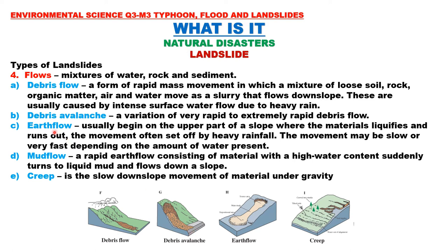Third is earth flow — it usually begins on the upper part of a slope where the material liquefies and runs out. The movement is often set off by heavy rainfall. The movement may be slow or very fast depending on the amount of water present.